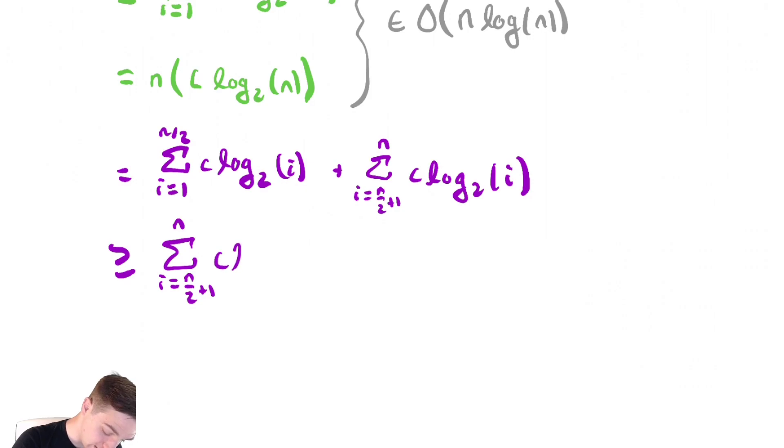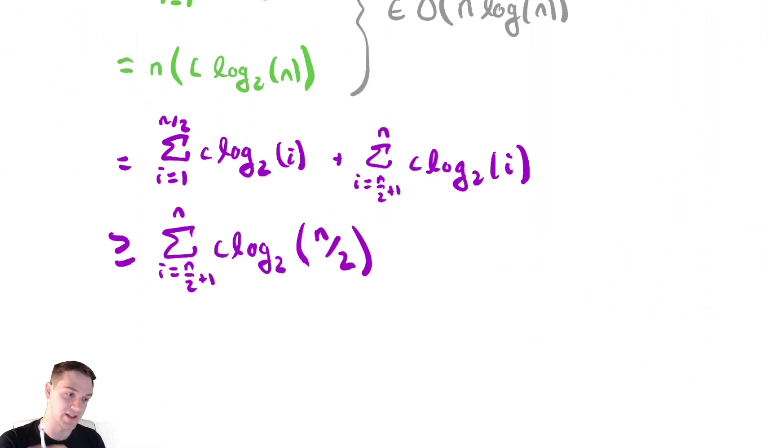So, this is greater than or equal to the sum from i equals n over 2 plus 1 to n of c log base 2 of... So, while getting rid of the first summation there, we are also going to replace the terms of the second summation with something that is smaller and convenient. So, I'm going to replace them with n over 2. That doesn't matter a whole lot, you could have chosen n over 2 plus 1, but I choose n over 2 because it makes my life easier.